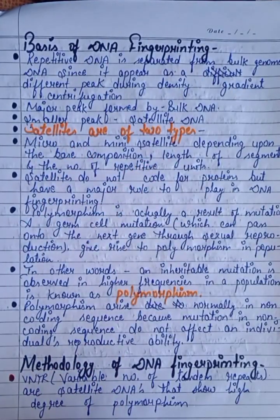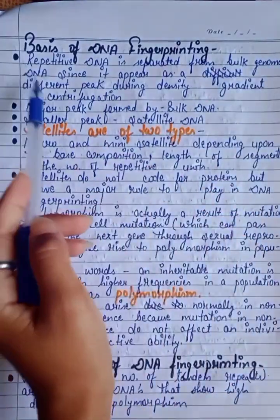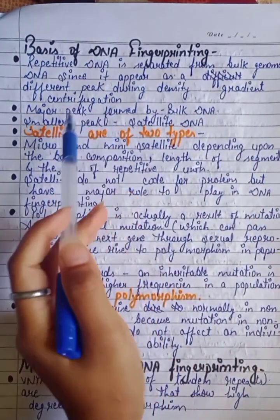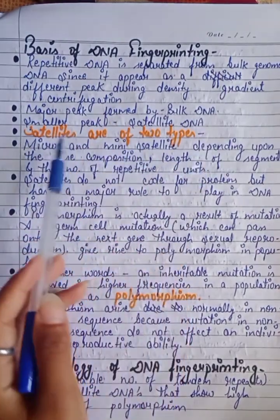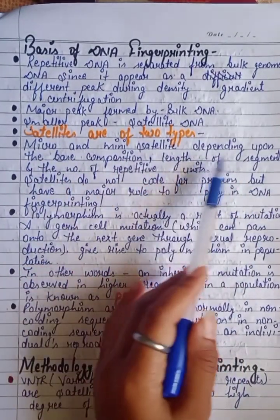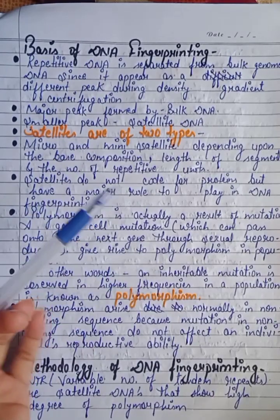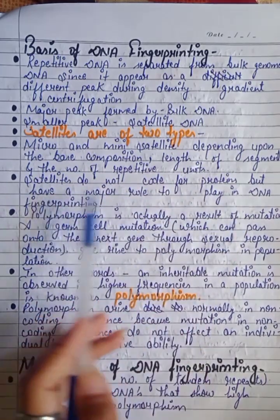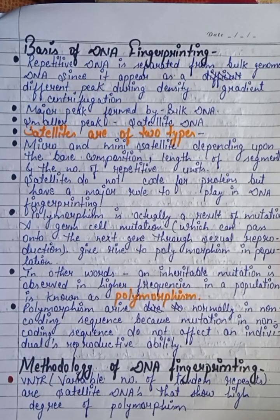Basis of DNA Fingerprinting: Repetitive DNA is separated from bulk genome DNA since it appears as a different peak during density gradient centrifugation. The major peak is formed by bulk DNA, and the smaller peak becomes satellite DNA. Satellites are of two types — micro satellites and mini satellites — depending upon base composition, length of segment, and number of repetitive units. Satellites do not code for protein but play a major role in DNA fingerprinting.